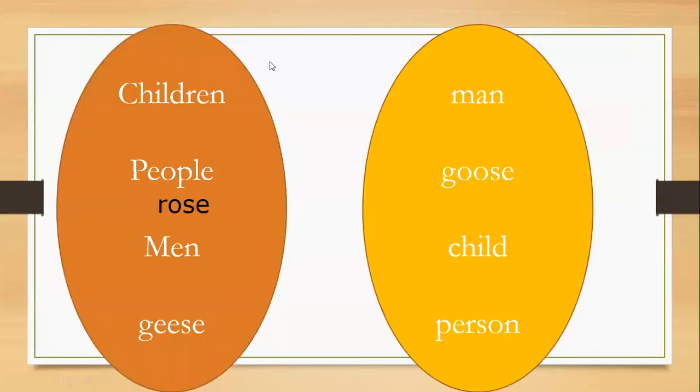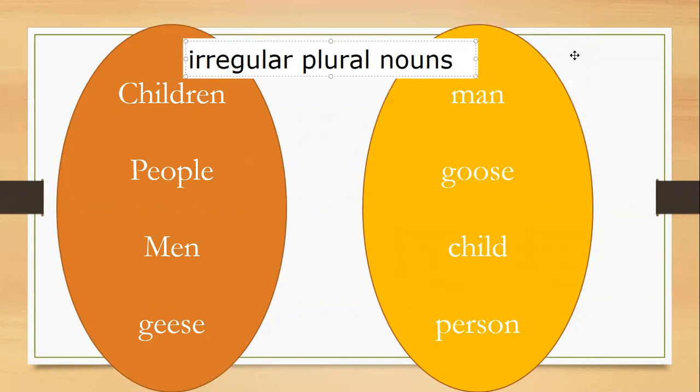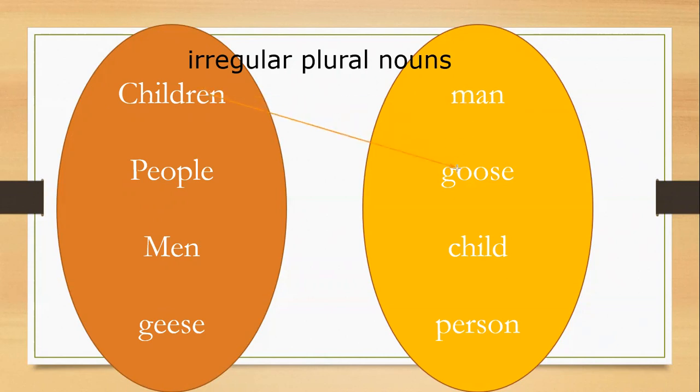Let's go next. What do we have here? We have here the irregular plural nouns. If I want to make it a plural, it will change totally. For example, let's go to the left side to match the right side. We have children. What is the singular from children? Man, goose, child, or person? Child. Excellent. So child, children. Well done.